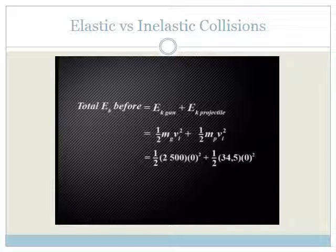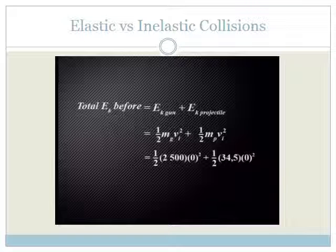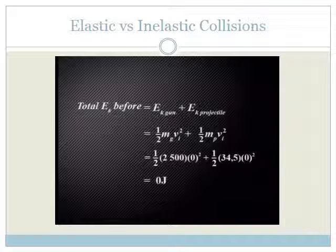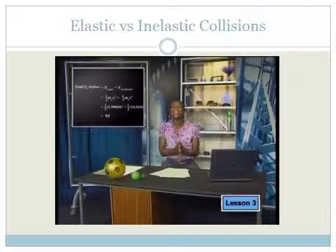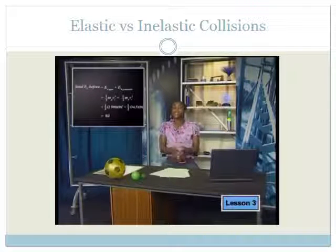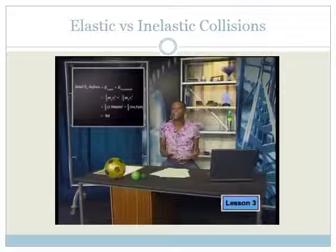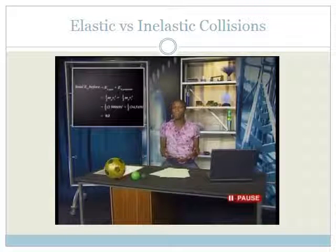Substituting in the values: half times 2,500 times zero squared, plus half times 34.5 times zero squared. This gives us an answer of zero. This value makes sense as the gun and the projectile aren't moving, so they can't have any energy that is defined by motion. But what about after the explosion has taken place? Will the system have kinetic energy then?